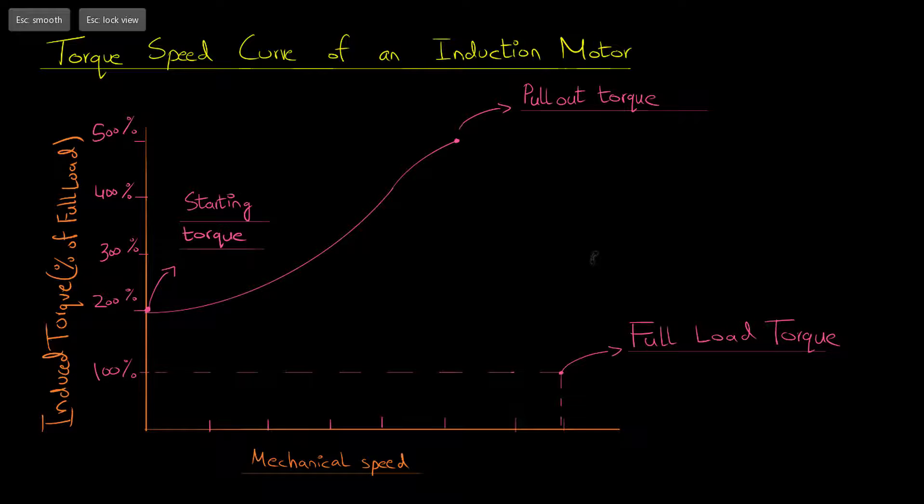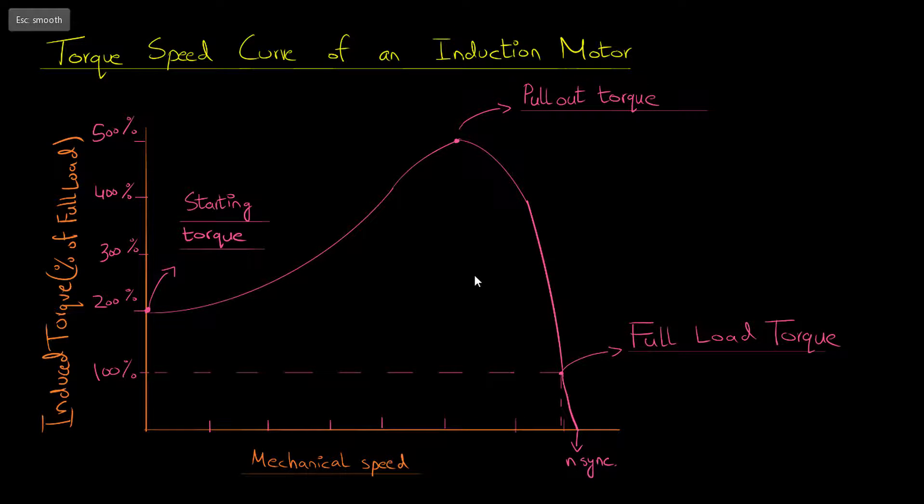The pullout torque is the value of torque that theoretically cannot be exceeded by the motor, and the pullout torque is around 2-3 times the full load torque. Then the curve dips down sharply and reaches zero at the synchronous speed because the torque developed at the synchronous speed is zero.